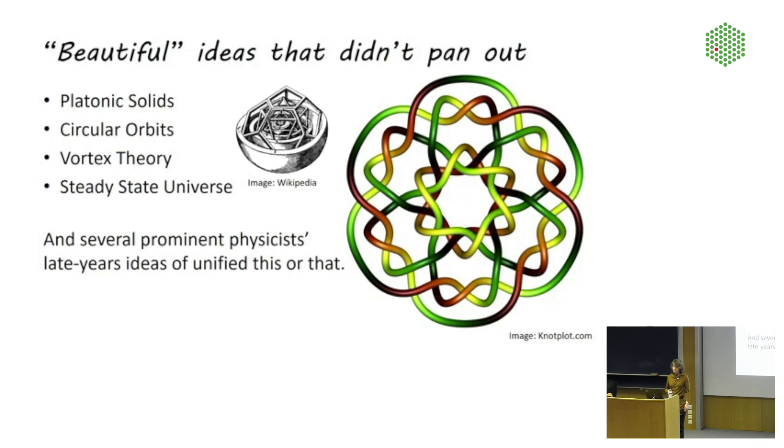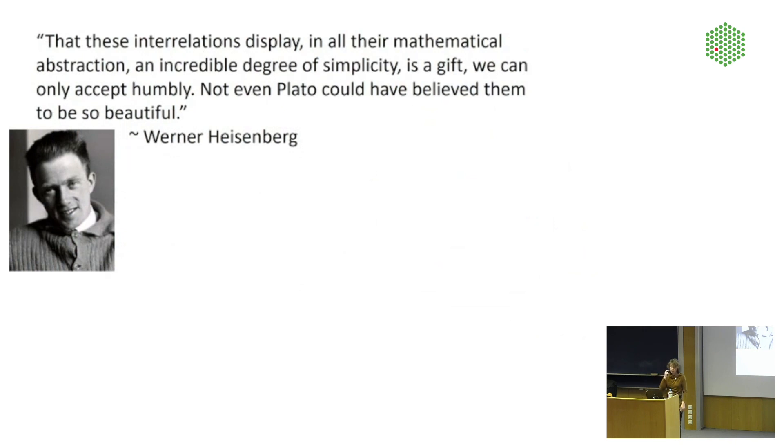And then there are several prominent physicists' late years idea of unified theories. One example of which is Werner Heisenberg, who wrote sometime in the 1950s in a letter to his sister, that these interrelations display in all the mathematical abstraction an incredible degree of simplicity as a gift we can only accept humbly. Not even Plato could have believed them to be so beautiful. And so he was not referring there to his theory of quantum mechanics, which has been extremely successful. But he was referring to his attempt at a unified theory of everything that he was working on at the time.